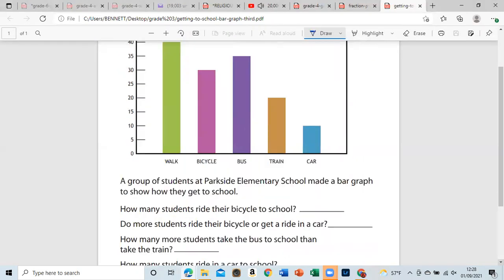How many students ride their bicycle to school? So what we have to do is go to bicycle, go across. And that would be 30. So the reading, take the reading from the y-axis. So that first one is 30.